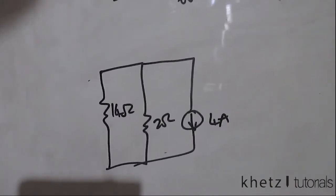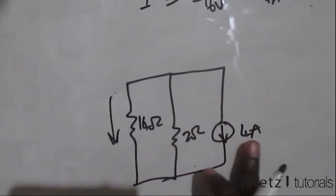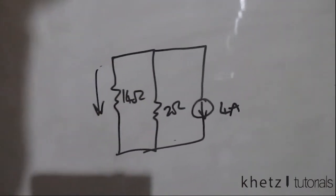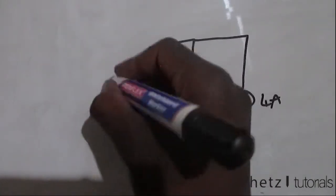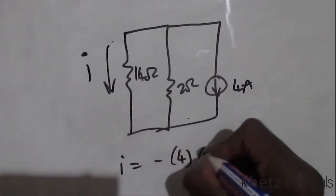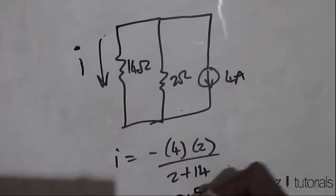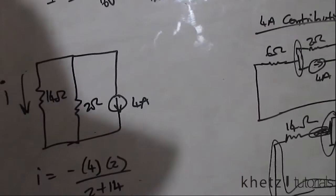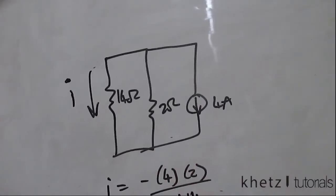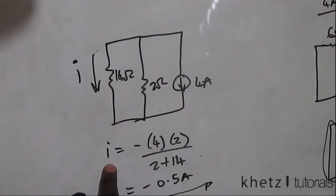We want to find the current going through that point. We can use nodal analysis or current division. Using current division, i due to the 4 amperes equals negative 4 multiplied by 2 divided by (2 + 14), giving 8/16 = negative 0.5 amperes. That is the contribution of the 4 amperes to i.